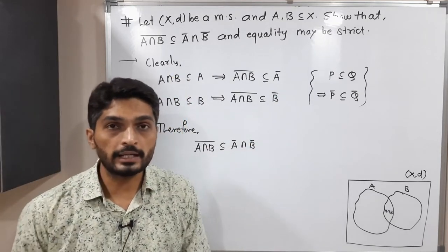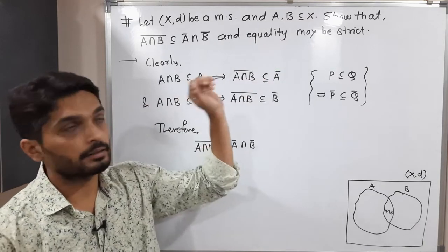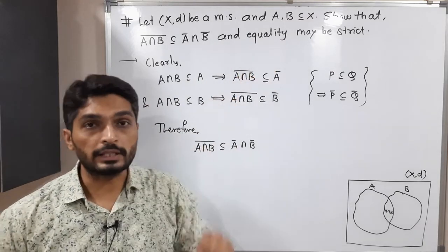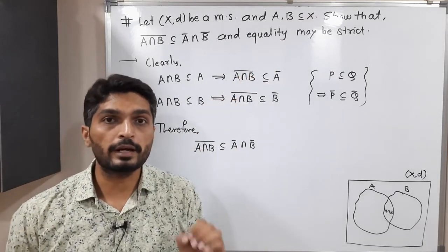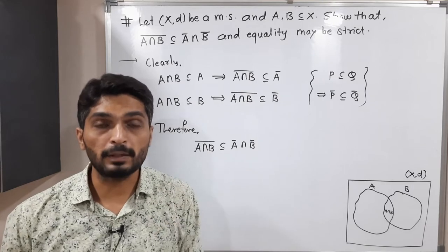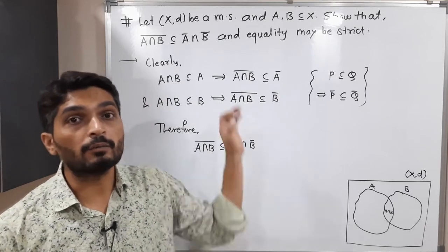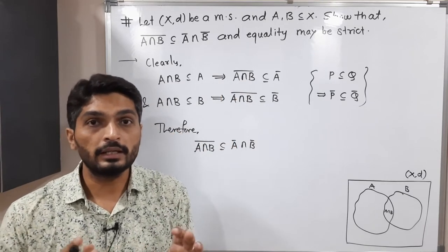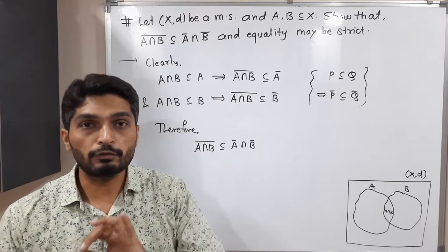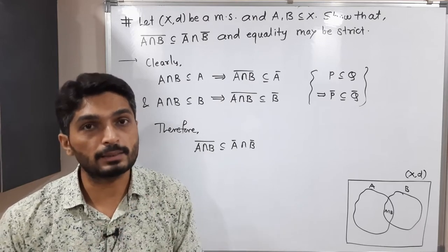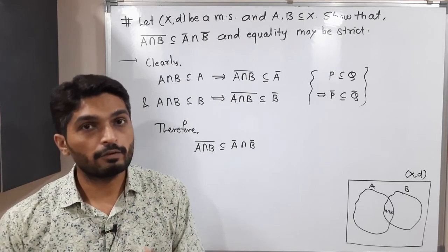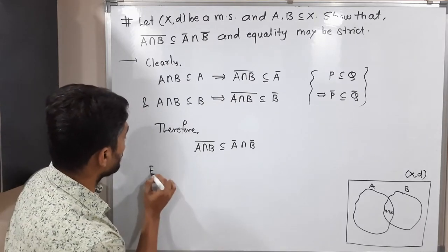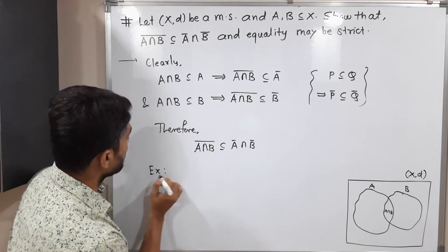After that, let us complete the remaining part: equality may be strict. That means we have to find one example where equality does not hold — there will be a proper subset, not equality. So let us find one such example.